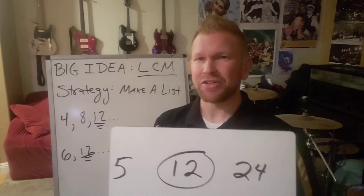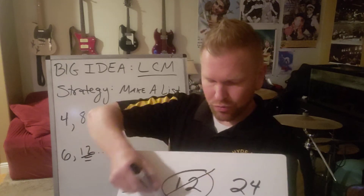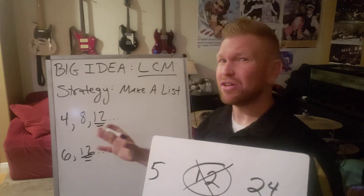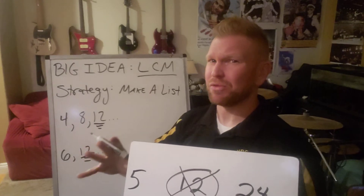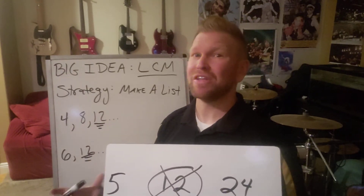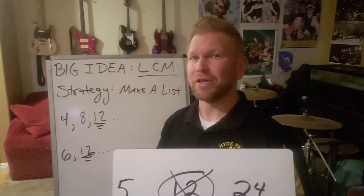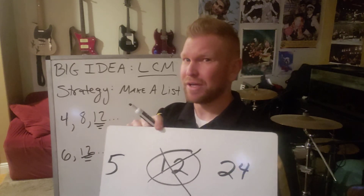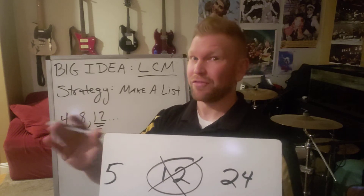A distractor is an answer that is not right, but it's made to look like it's a trap that was set for you — so maybe you would think it was right, even though it's not right. So oftentimes in multiple choice, you want to see if there's a distractor and try to pick it out so you don't fall for that trap.